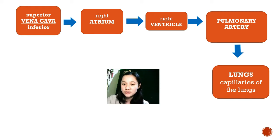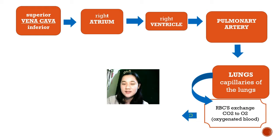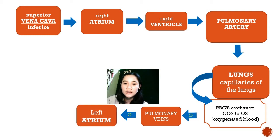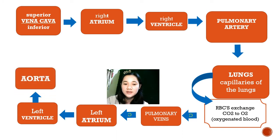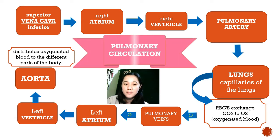From the lungs, through the action of the capillaries — which is the smallest blood vessel — and through the action of diffusion, the red blood cells containing carbon dioxide will then be replaced with oxygen. They will then be oxidized, and the oxygenated blood will then flow to the pulmonary vein, to the left atrium, and to the left ventricle. And from there, it will then move up to the aorta, from which it will be distributed to the different parts of the body. This is called the pulmonary circulation.